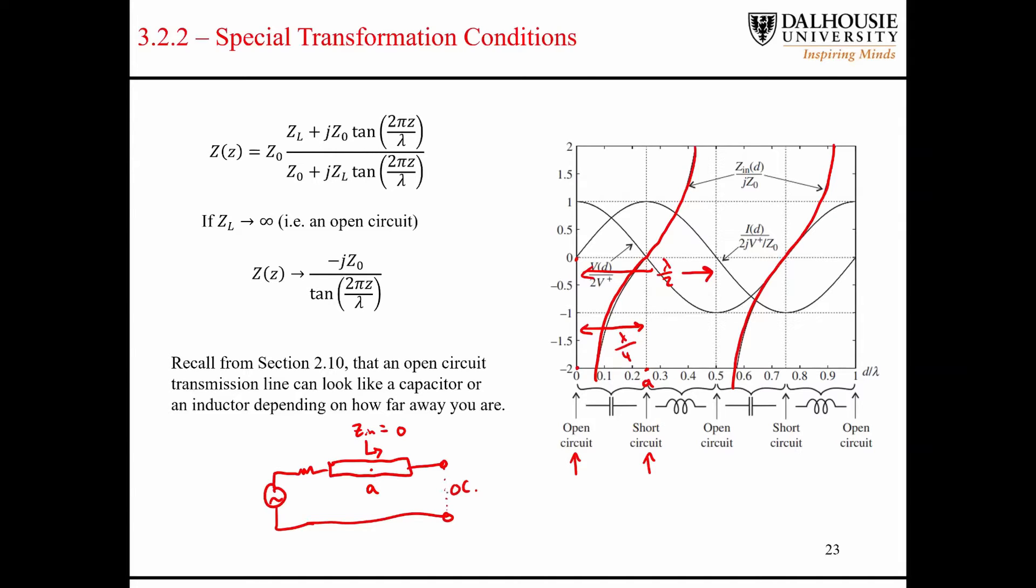So it looks like a short circuit at this point. But in between, where our position is less than a quarter wavelength, and in between where our position is greater than a quarter wavelength but less than half of a wavelength, in this range here, these two ranges correspond to these two ranges. We can see that the impedance looks capacitive within this range and looks inductive within this range.